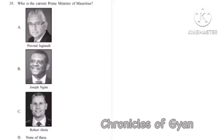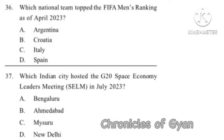Question 35: Who is the current Prime Minister of Mauritius? It is Option A, Pravind Jugnauth. Question 36: Which national team topped the FIFA Men's Ranking as of April 2023? The correct answer is Option A, Argentina.